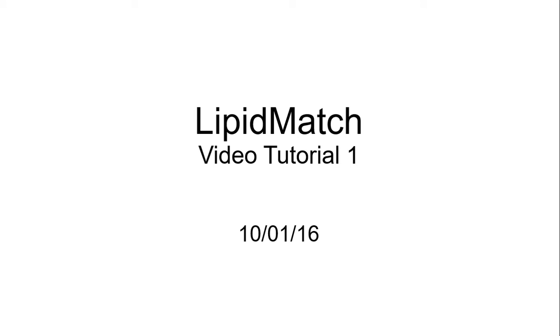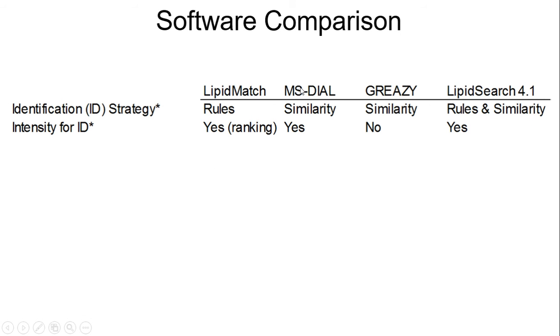In addition to LC-MS-MS data, other experimental designs can work for LipidMatch as well. To show the advantages of LipidMatch versus other software, we'll look at three other software that are widely used in the lipidomics community, especially MS-Dial, which is an open-source software, and LipidSearch, which is a paid license software. In terms of identification strategy, LipidMatch is rule-based, and the rule-based identification allows LipidMatch to annotate structures based on the correct structural resolution.